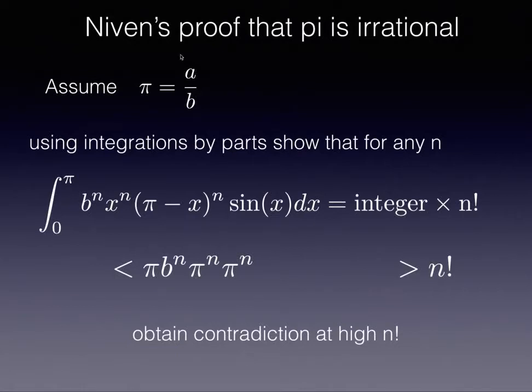In this video, I will briefly explain Niven's proof that pi is irrational. First, we assume by way of contradiction that pi is rational, meaning that it's a ratio of two integers a and b.